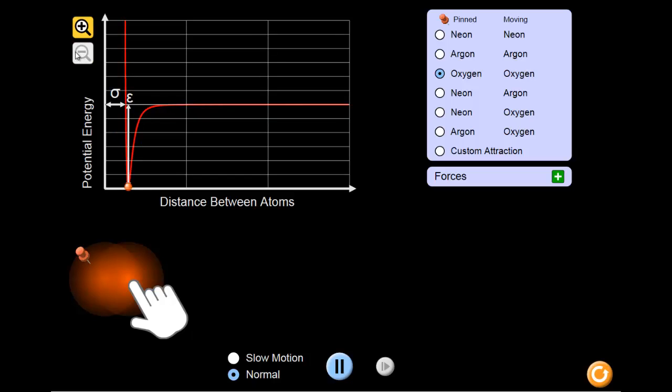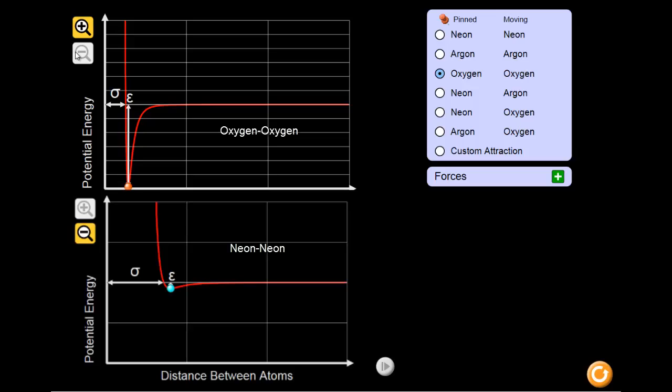What differences do you notice between the graphs of the two different atoms? As you can see, something markedly different occurs between the two oxygen atoms. Let's take a look at what's going on.